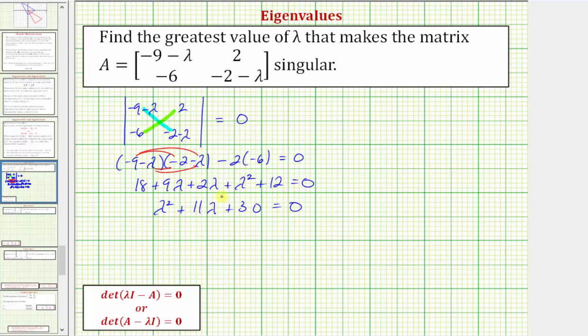The left side factors into two binomial factors. The factors of lambda squared are lambda and lambda. The factors of thirty that add to eleven are positive six and positive five. So this product equals zero when lambda is equal to negative six or when lambda is equal to negative five.